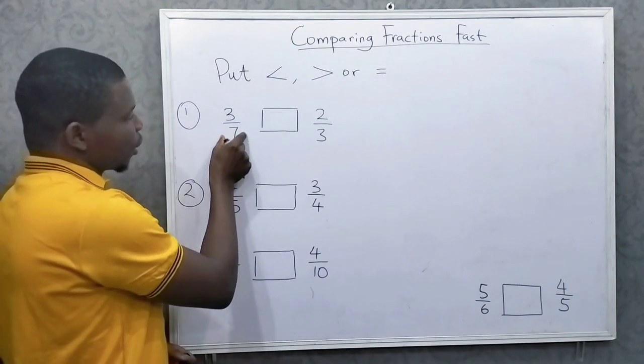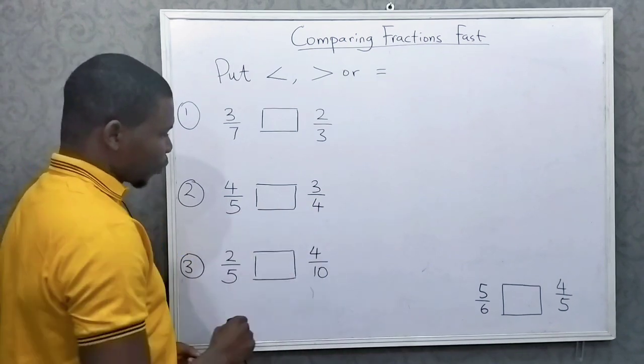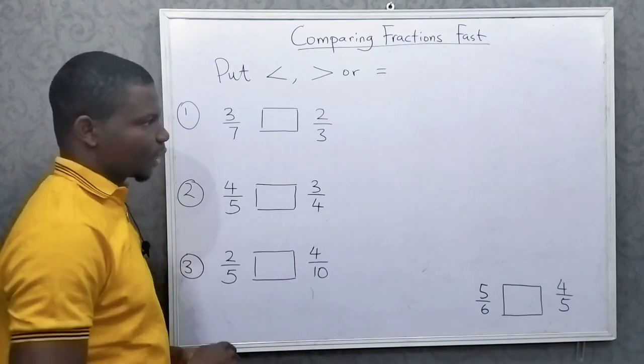We want to know 3 over 7 and 2 over 3, which one is bigger? 4 over 5 and 3 over 4, which one is bigger? 2 over 5 and 4 over 10.